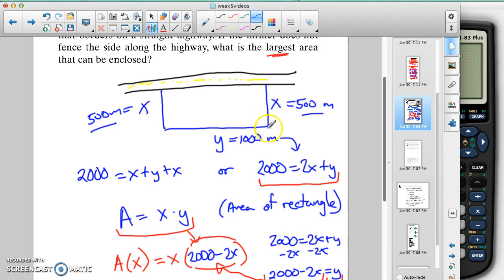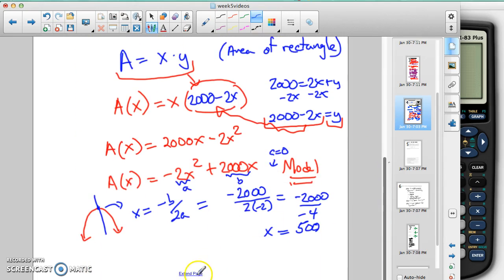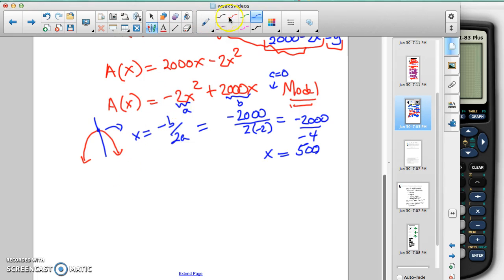It's not asking for the dimensions. It's asking for the area. So looking at this picture, we can just multiply x times y. We now know x is 500 and y is 1,000.